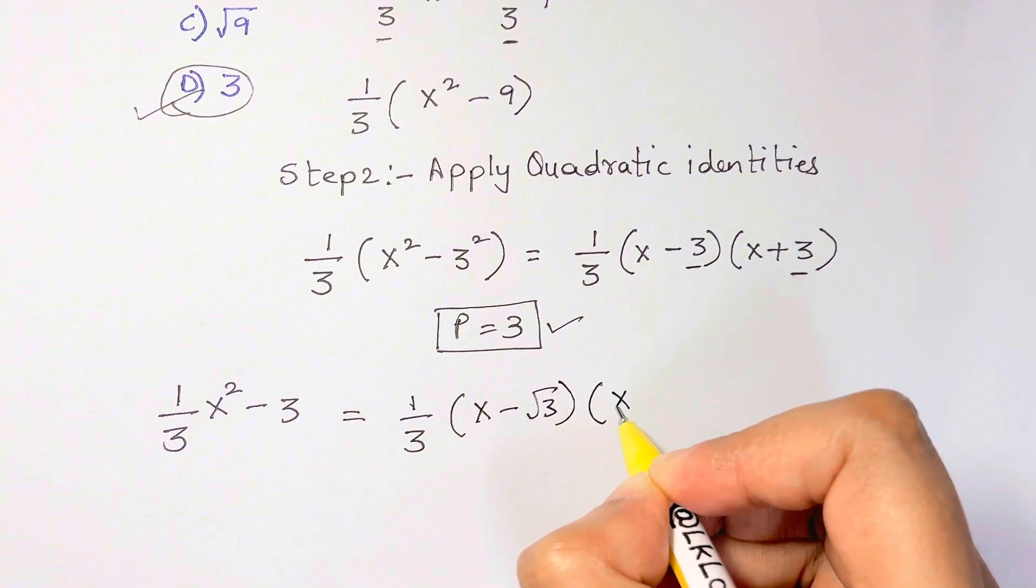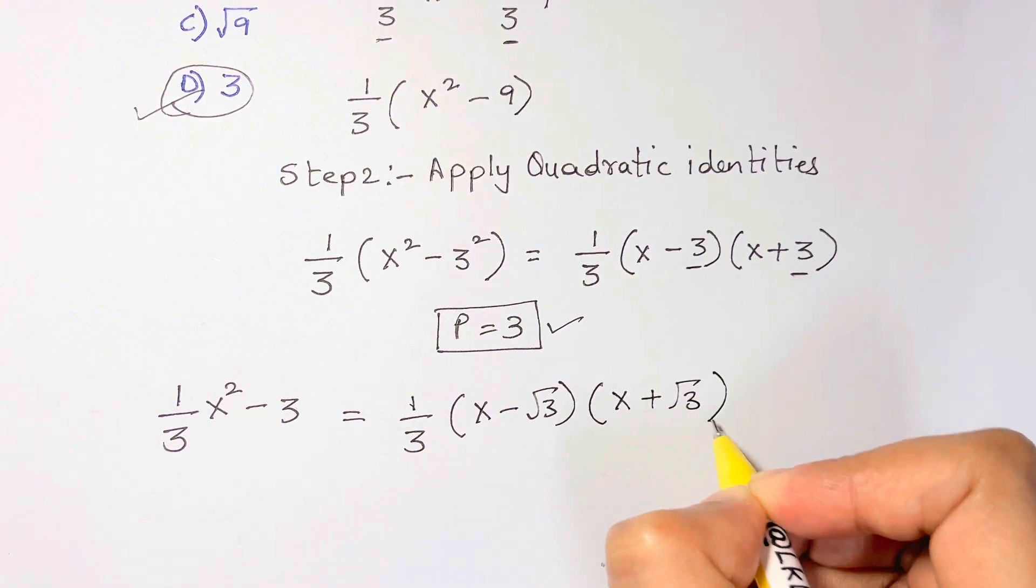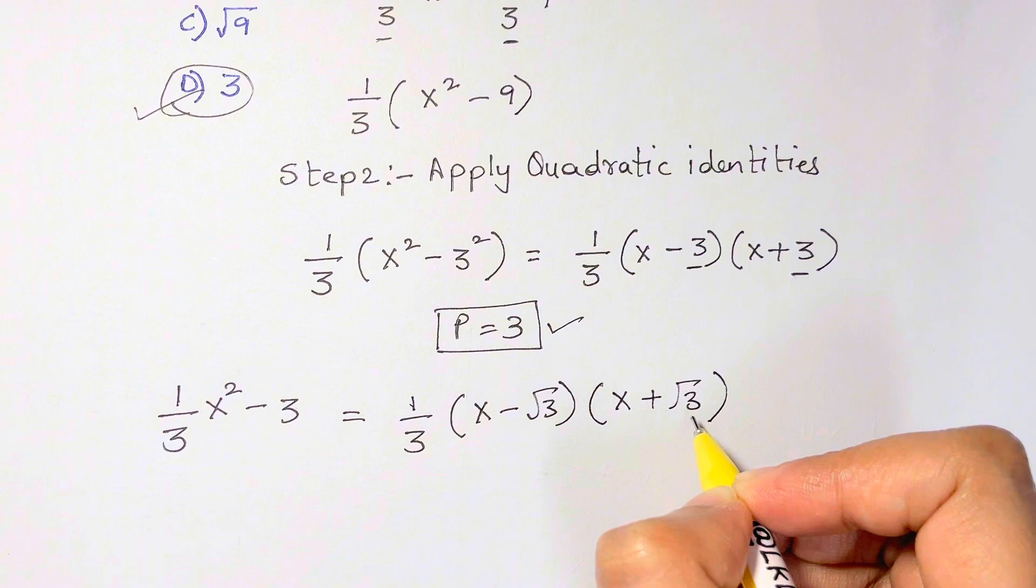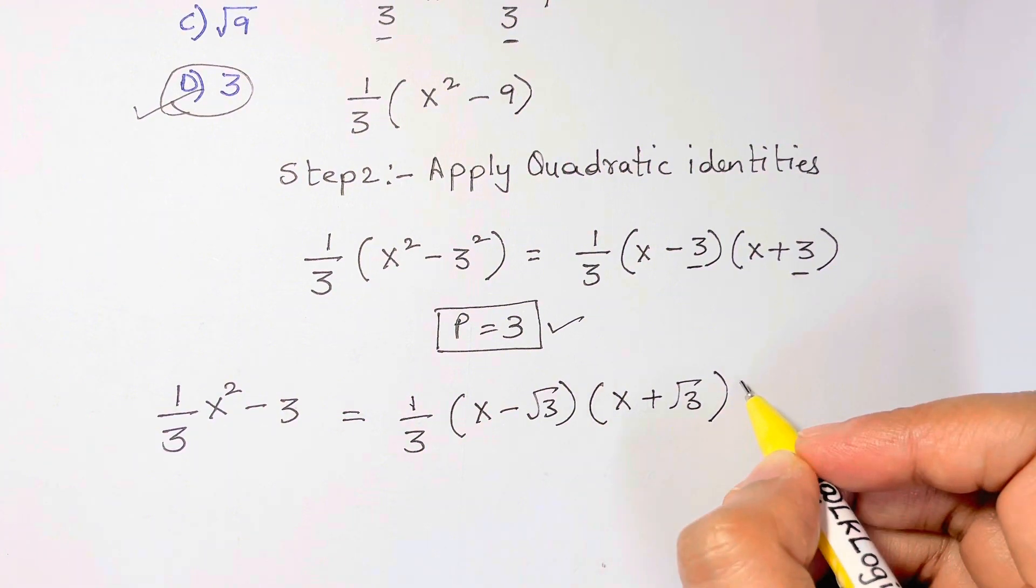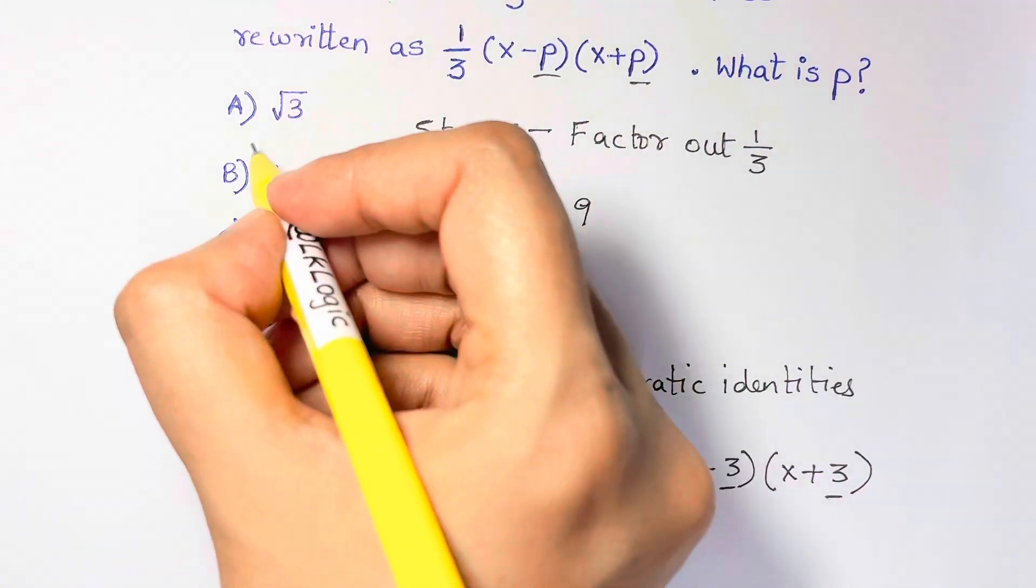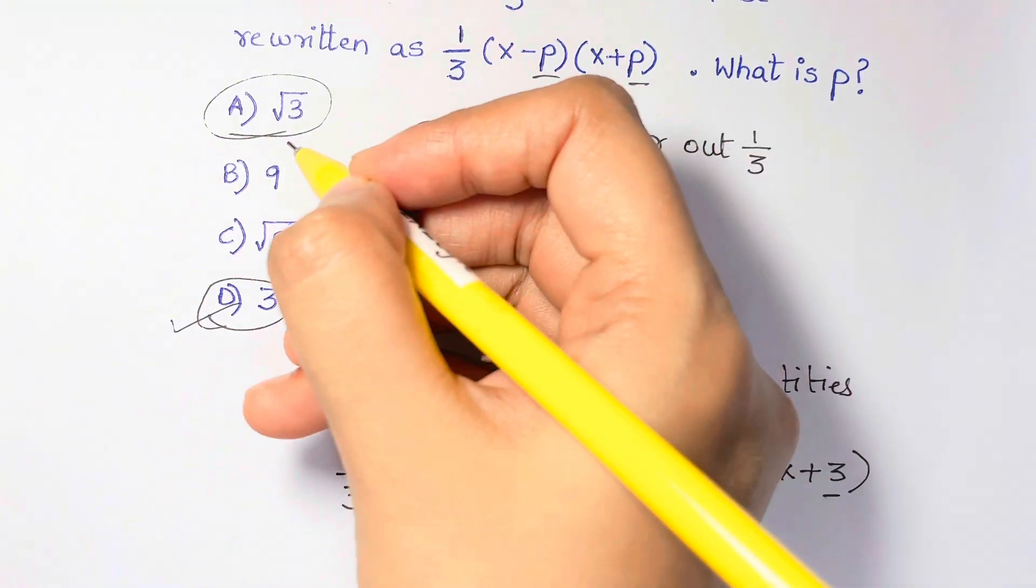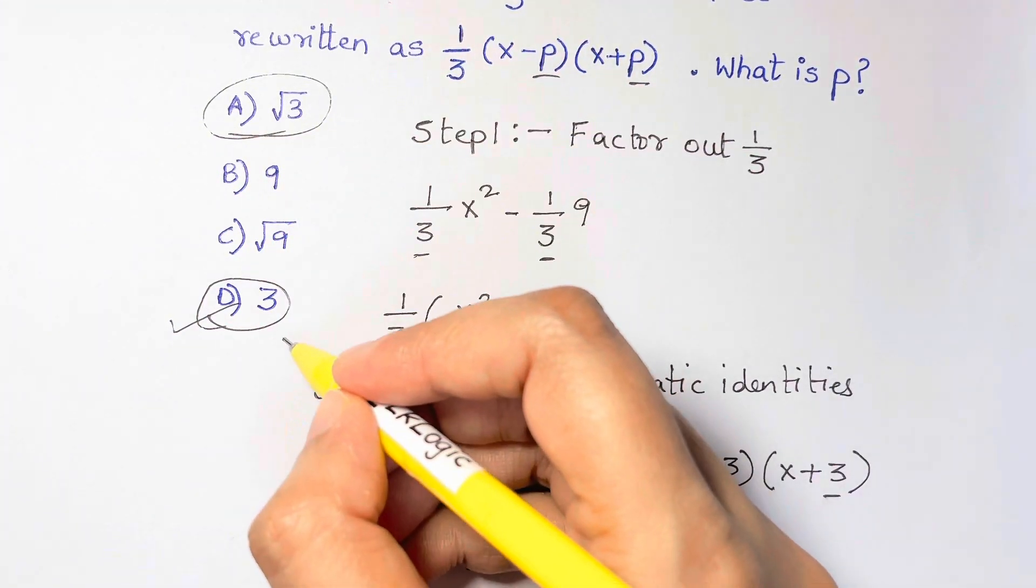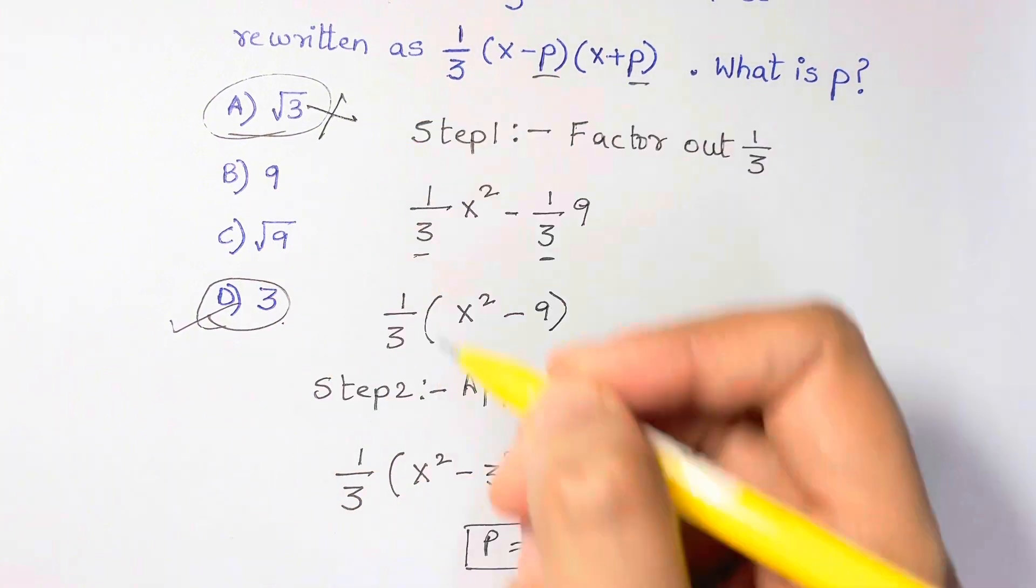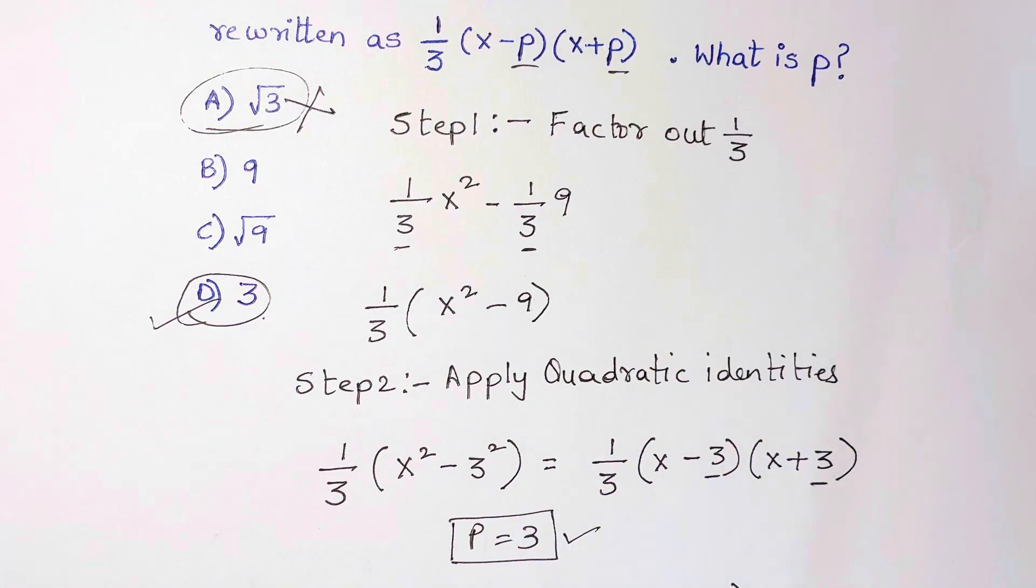Therefore, they erroneously choose answer choice A because they think p is equal to √3. Well, actually, the right answer is D, not A. Thank you so much, bye bye, take care!